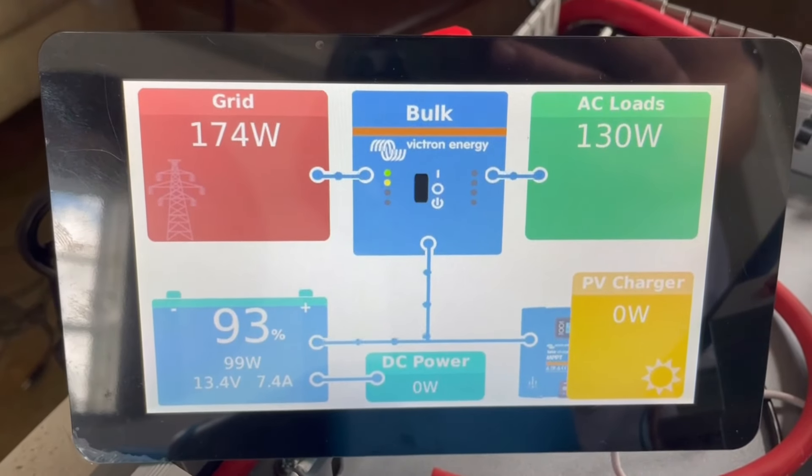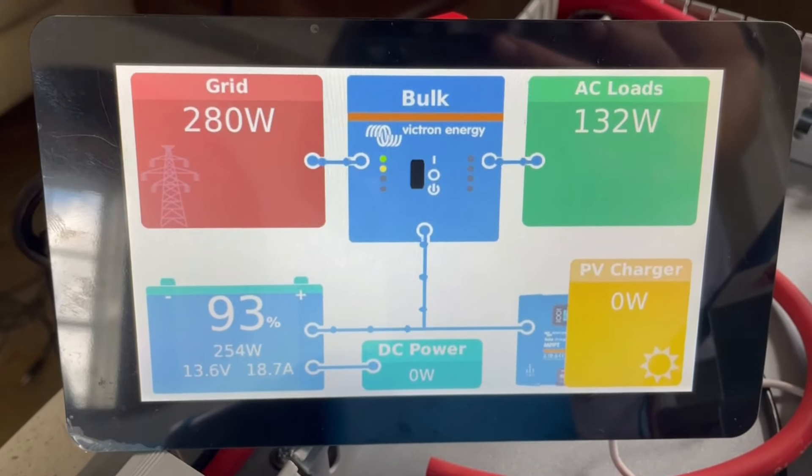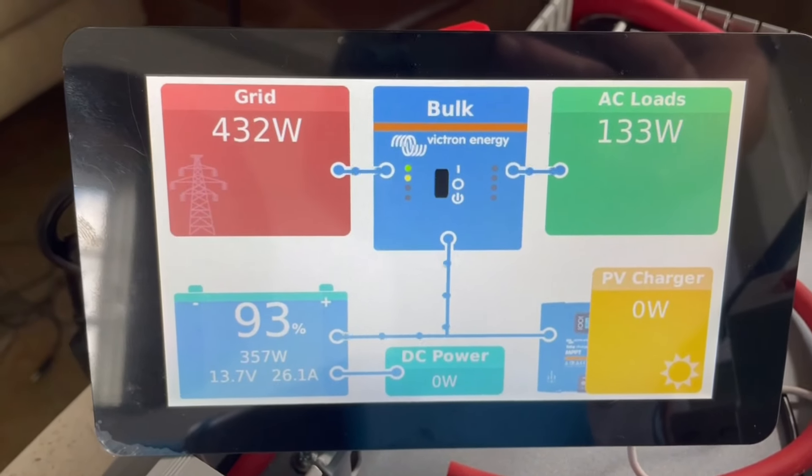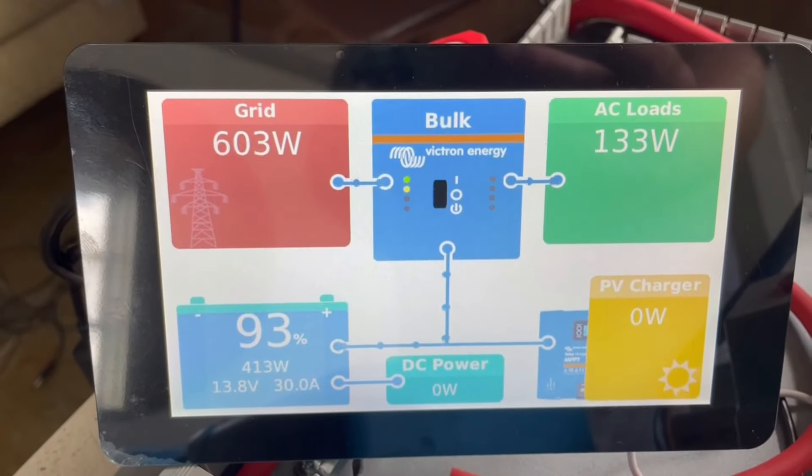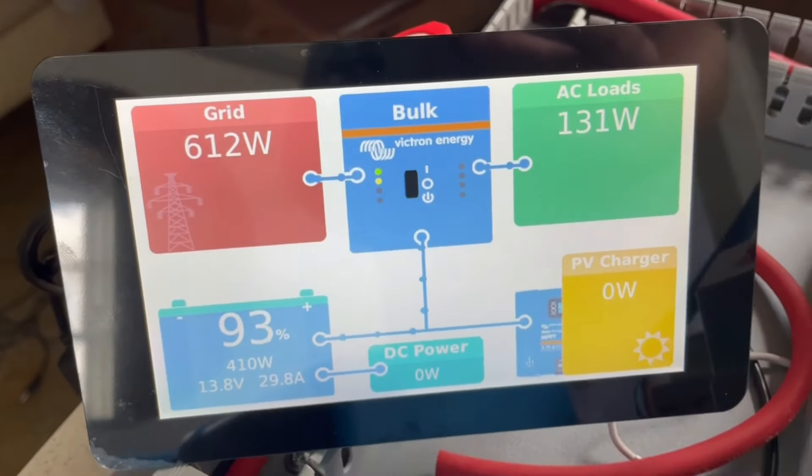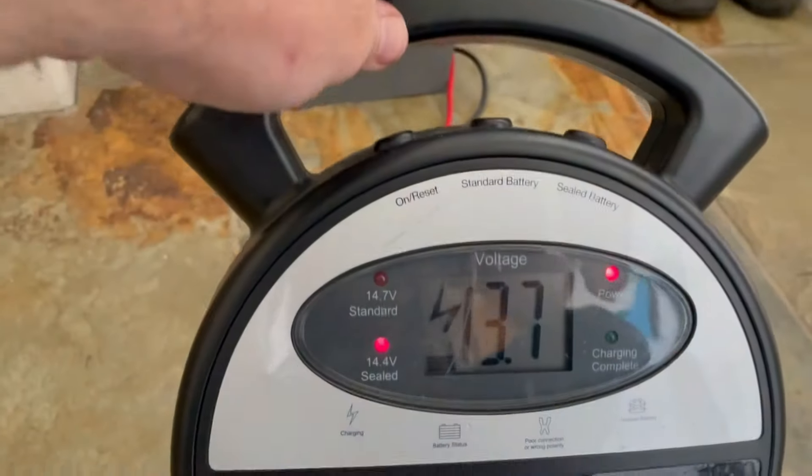We're still maintaining the AC load. It hasn't dropped that load. It's now also charging the lithium battery at 30 amps and maintaining the AC load. The charger hasn't stopped, it's still charging and hasn't missed a beat, which is really good.